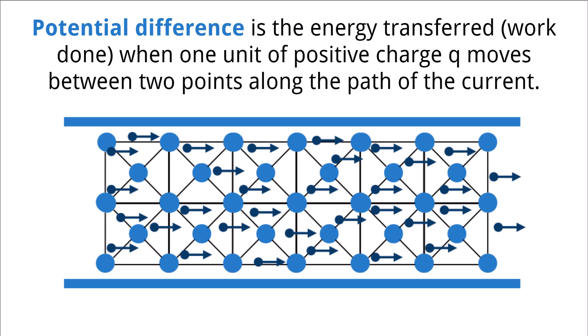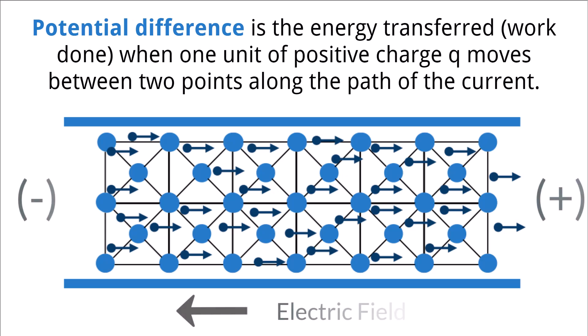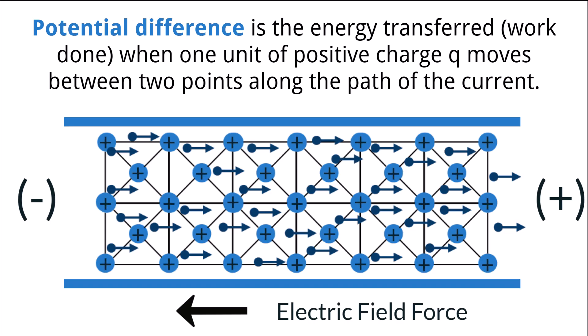In a conducting material, as electrons are moving through the lattice structure, they carry with them kinetic energy and charge. When the electrons move through the material due to an electric field, they carry with them the energy from the electric field. During their movement, the electrons will make collisions with the positively charged atoms in the lattice structure. The atoms are positively charged because they have lost their valence electrons. During the collision, the electrons transfer the energy gained from the electric field force to the positively charged atoms.